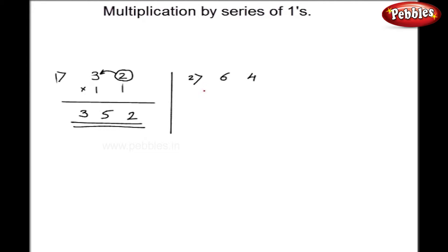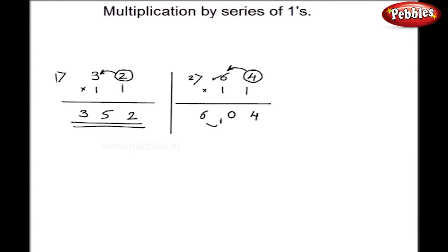Now let me take the second example: 64 multiplied by 11. Now pay attention — here we will get carry overs. As usual, I will start from the right. First digit is 4. Second step, I will do 6 plus 4, which is 10. I have to write it in this fashion. Next I will write 6, but I got carry over 1, so I have to add it to the next digit. Here I get 7, 0, 4.